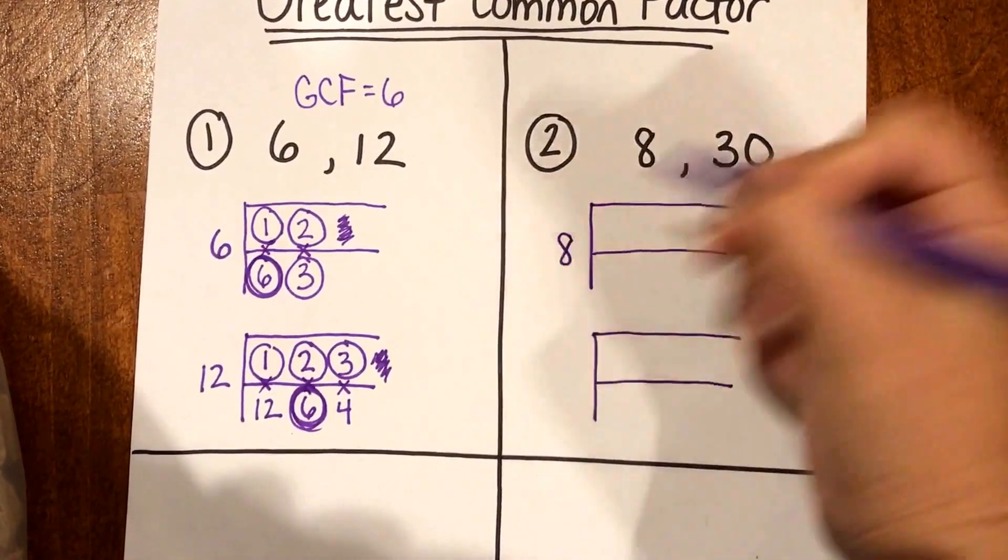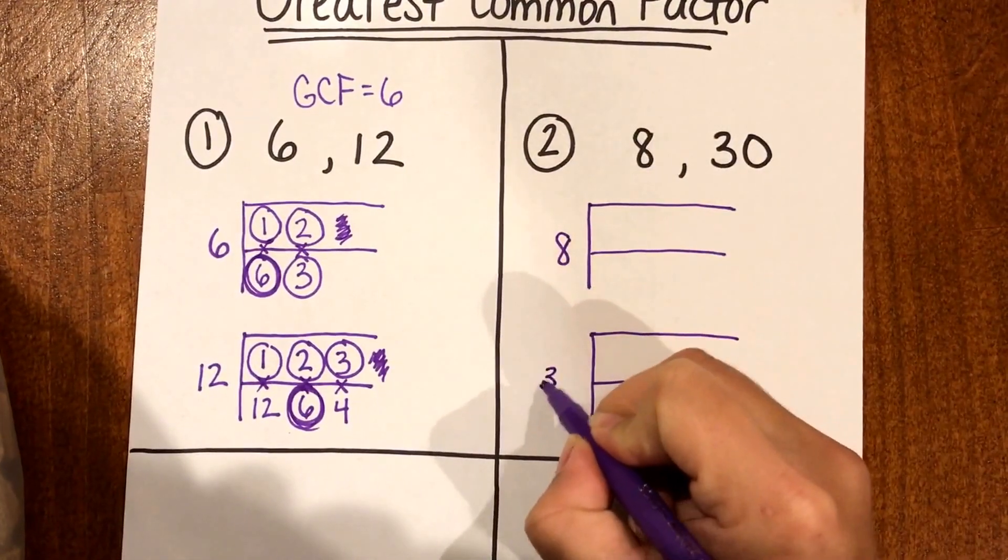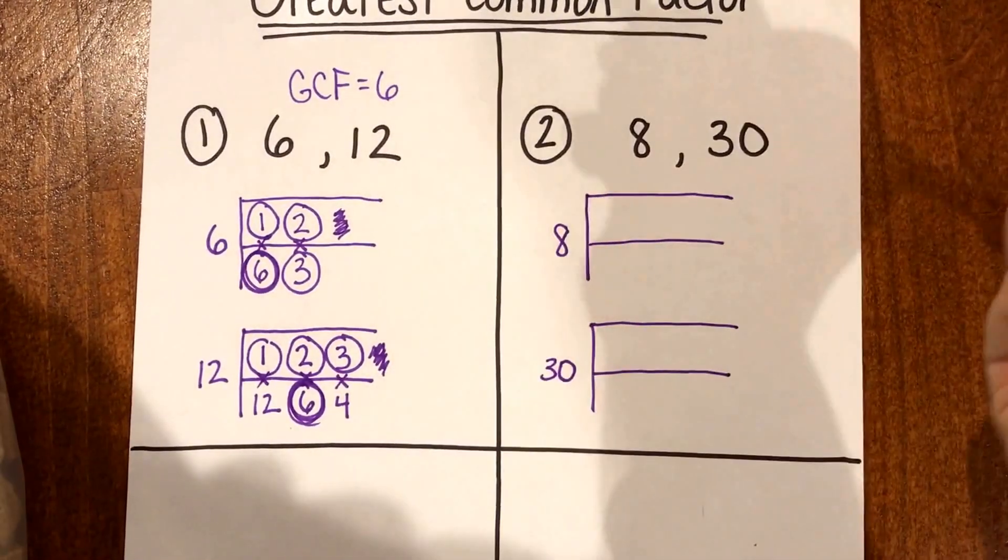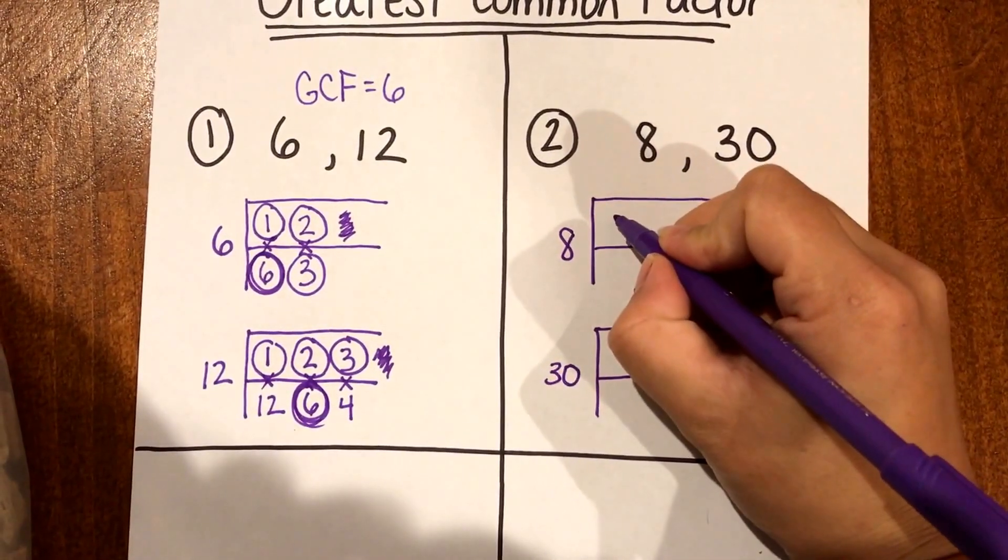My first number 8 goes with the first F and my second number 30 goes with my second F and then from the previous video I know I need to always start with 1.